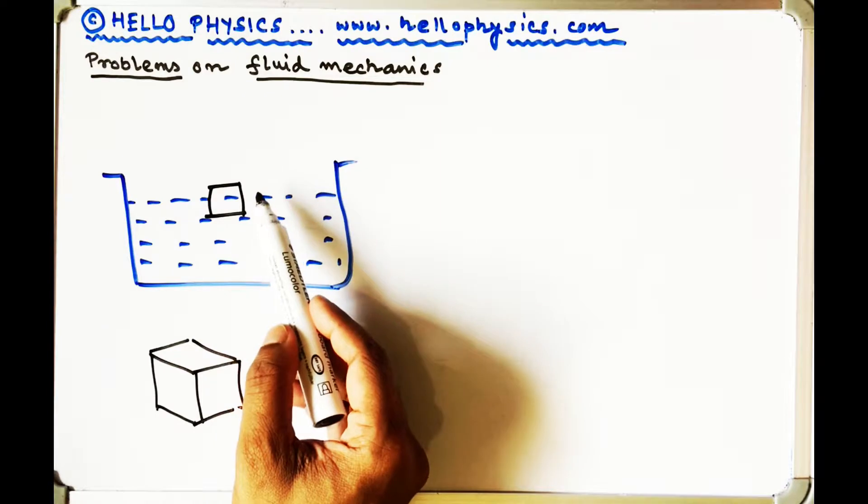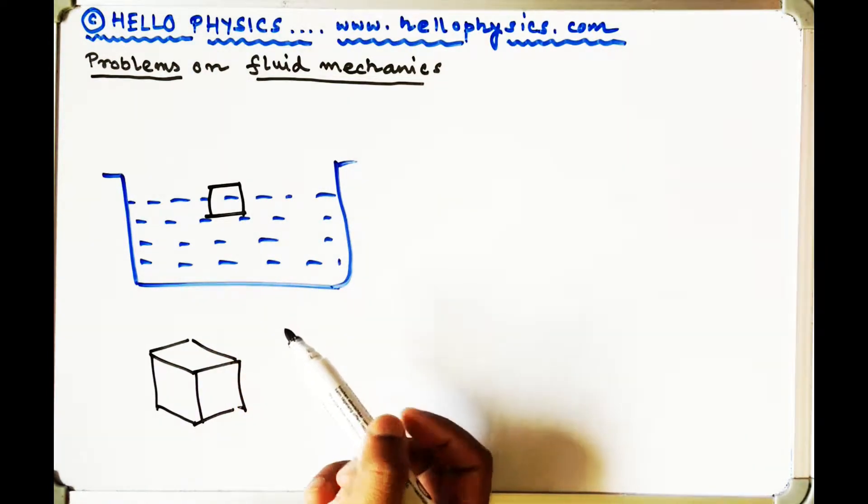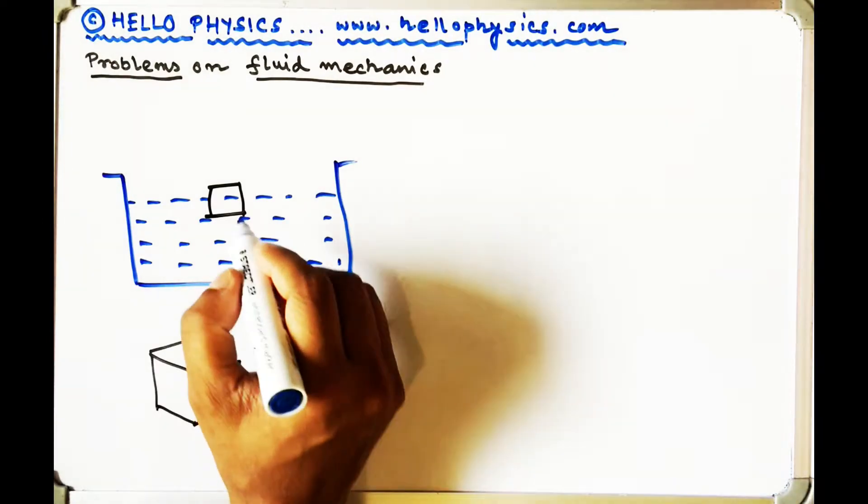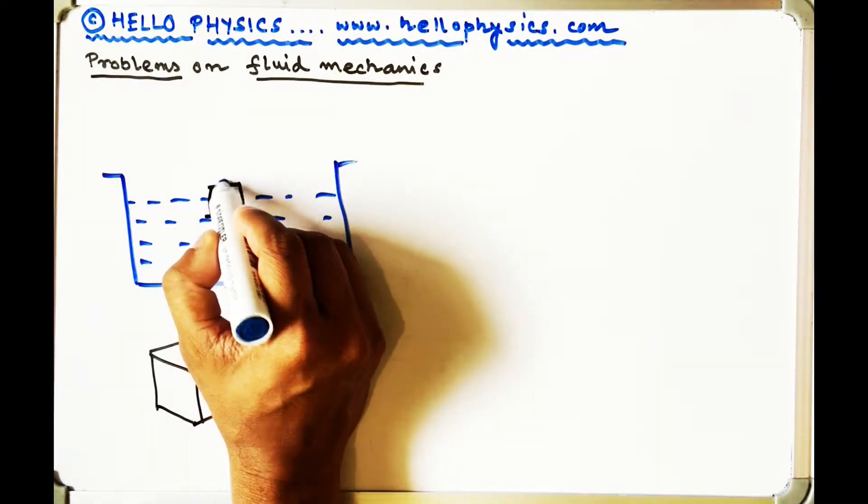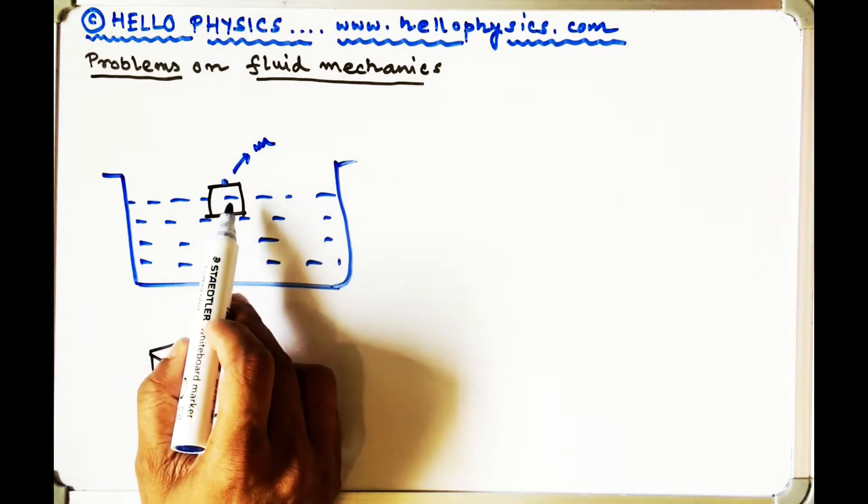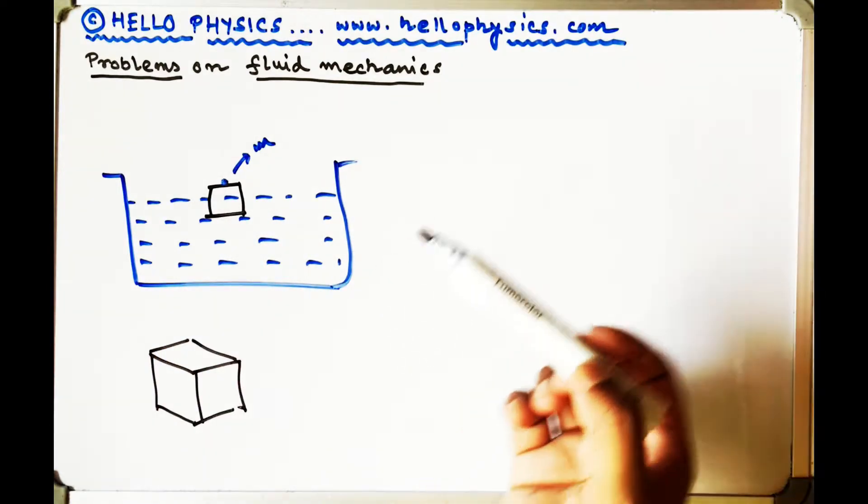This is the ice piece, and the ice piece is of course floating on water with certain percentage outside the water surface and certain percentage inside. Now what is done is a small particle of mass M is placed on top of the ice.